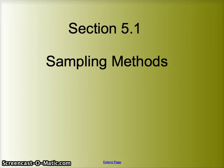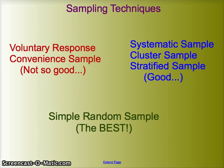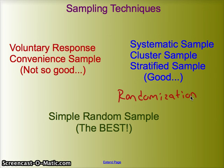This video is on sampling methods — different ways we might gather samples for experiments or observational studies. We're going to talk about six different methods. Voluntary response and convenience sampling are not so good, and we'll talk about why. Systematic sampling, cluster sampling, and stratified sampling are good because they use an element of randomization when gathering the sample. And then simple random sampling, which is the best in terms of getting the most random sample — not always the best from a methodology standpoint, but the best in terms of randomization.